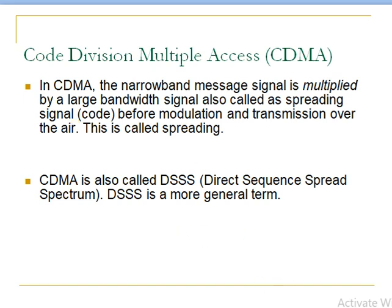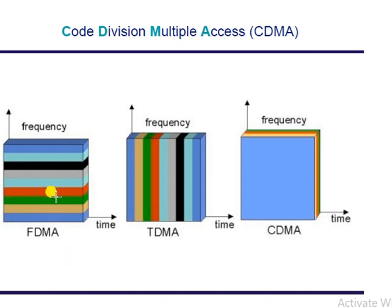As you can see, in FDMA, frequency slots are divided; in TDMA, time slots are divided. In CDMA, neither frequency nor time is divided — it is the code which is unique for every user. As shown in the diagram with colors — blue, green, orange, and yellow — each color represents a different user. Every user has a different code but can transmit at any time and across the complete frequency range, unlike TDMA and FDMA.